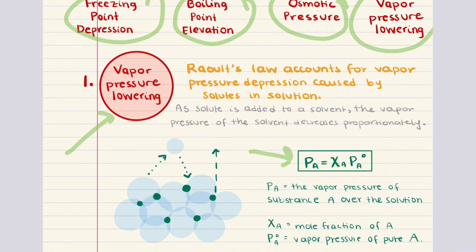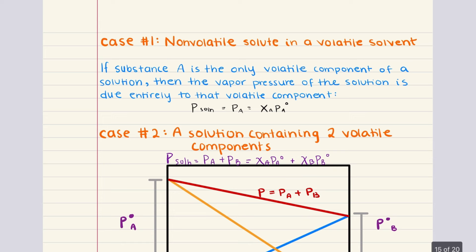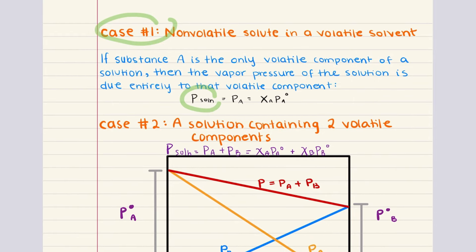To determine the vapor pressure of a solution, we're going to consider two cases. The first case deals with a non-volatile solute in a volatile solvent, and the second case deals with a solution with two volatile components. In the first case, when a non-volatile solute is dissolved in a volatile solvent, the vapor pressure of the solution is solely due to the volatile solvent. The non-volatile solute does not contribute to the vapor pressure because it doesn't evaporate. Therefore, the vapor pressure of the solution is determined by the vapor pressure of the solvent component alone.